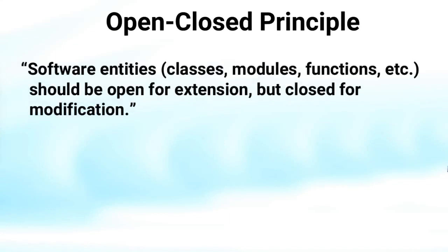The next one is the Open-Closed Principle, which states software entities should be open for extension, but closed for modification. The idea is that an entity allows its behavior to be extended but never by modifying its source code. Any class should be written in such a way that it can be used as is. It can be extended if need be, but it can never be modified. Use the class in any way you need, but modifying its behavior comes by adding new code, never by modifying the old. The same principle can be applied to modules, packages, and libraries.